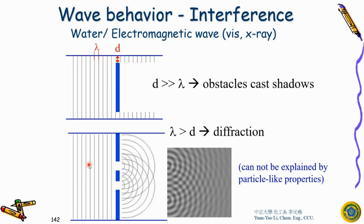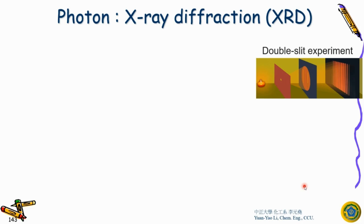You cannot explain interference by particle-like properties. We can use photons to demonstrate wave behavior. When you were in high school, you learned about the double slit experiment with light — a candle and two slits — and you can find diffraction and interference patterns. This tells us photons have a wave character. But photons also have a particle character. Both are true.